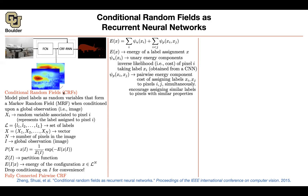Last session we covered conditional random fields. The idea is: you have a neural network — let's say a fully convolutional network — doing per-pixel classification. For each particular pixel, it outputs the probability that this pixel belongs to a particular class.